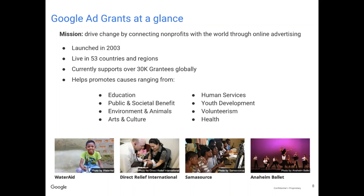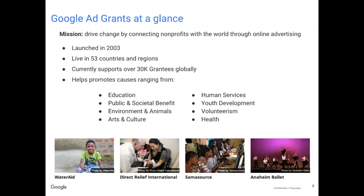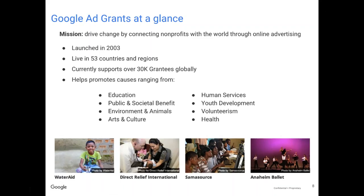From a high level, Google Ad Grants is a program that Google runs to provide AdWords or paid search advertising to nonprofits spanning many different verticals and types of organizations. It's actually been around for a long time — it was launched in 2003. We have it live in 53 countries, so it's very global in nature. The program actually supports over 30,000 grantees across the world now. If you're familiar with the program, you'll know that it has its highs — it's a great program — but it also has some challenges in terms of how you can leverage those funds.